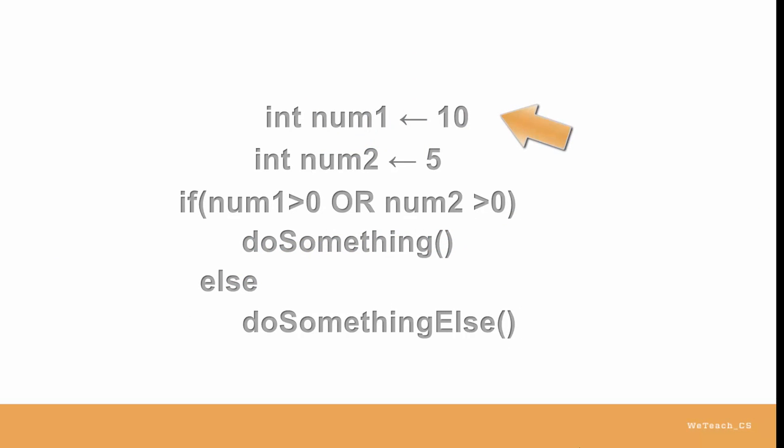NUM1 gets 10, NUM2 gets 5. If NUM1 is greater than 0 or NUM2 is greater than 0, do something else. Now this is not quite as dramatic an example as the AND we saw earlier, but it still shows a short circuit situation for OR. For the entire expression to be TRUE, either part needs to be TRUE.